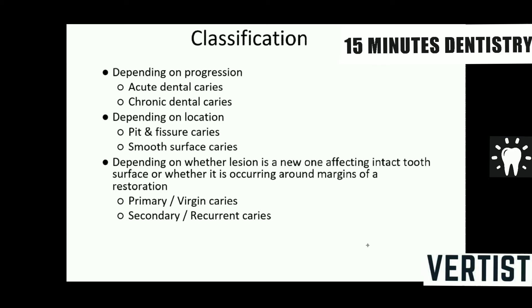Caries is classified depending upon its progression as acute and chronic dental caries, and depending upon its location as pit and fissure caries or smooth surface caries. Smooth surface caries can occur on the enamel or on the cementum. If the lesion is new, it is called primary caries; if it occurs around the margins of a restoration, it is called secondary or recurrent caries.